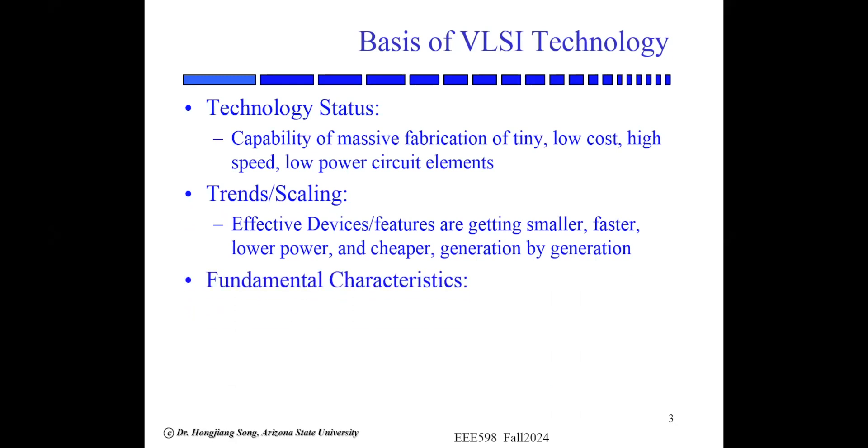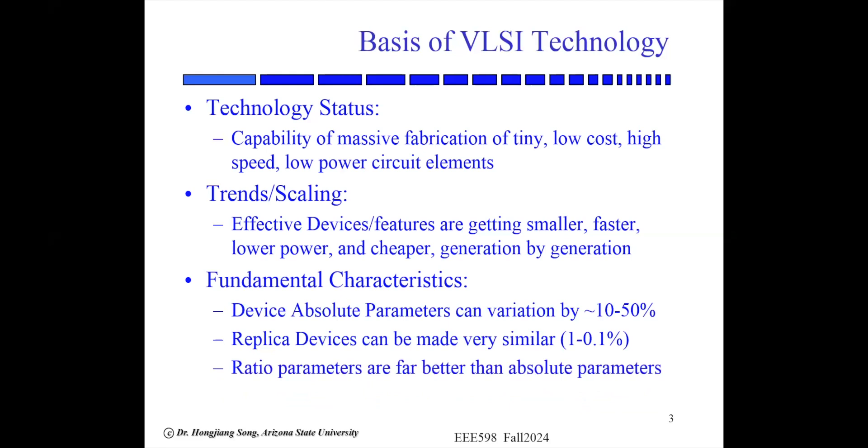However, there are some fundamental benefits and limitations of the VLSI technology itself. The first one is the absolute value or absolute parameter of a device. It's really hard to control and it can vary a lot, typically 10% to 50%. However, we can make replica devices tracking each other. That means for the same type of device, if you make a replica, we can have very good match down to even 1%. As a result, for VLSI circuit design, the ratio-based parameters are much better than absolute parameters.